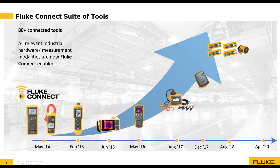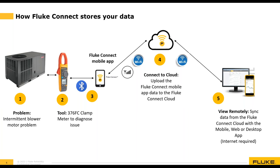For example, the 376 FC clamp meter, the 1664 FC installation tester, and the T3000 FC temperature module are all Fluke Connect enabled. The only exception is the Fluke suite of thermal image cameras — most of them work with Fluke Connect but do not include FC in the model name. Fluke Connect is available in over 74 different countries, and the measurement software is 100% free.